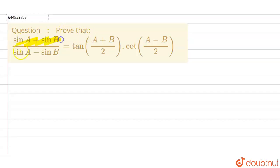Our question is prove that sine A plus sine B upon sine A minus sine B equals to tan of A plus B by 2 into cot of A minus B by 2.